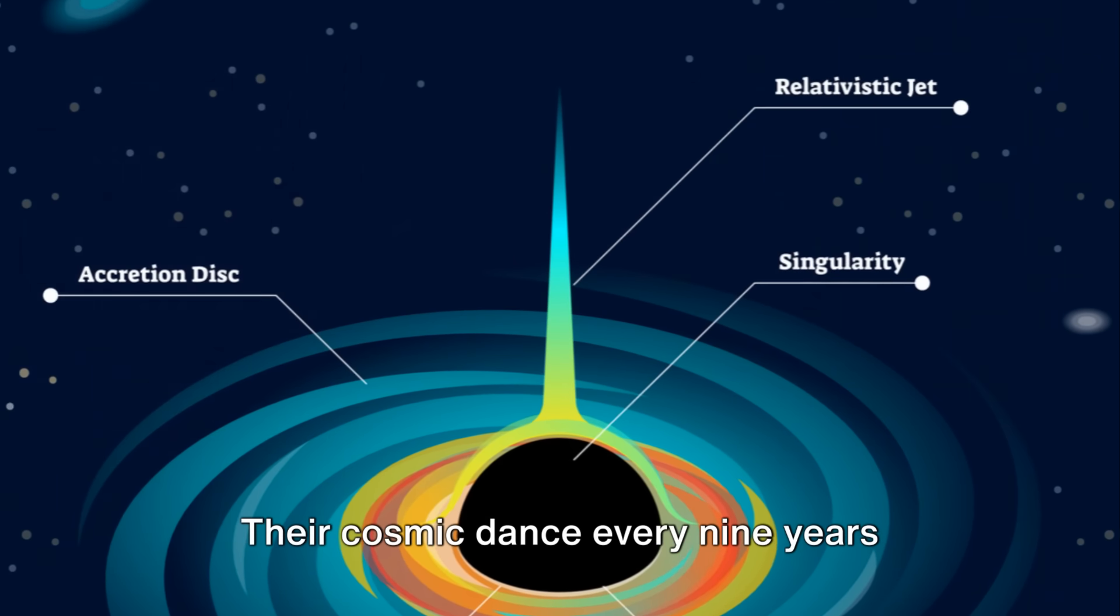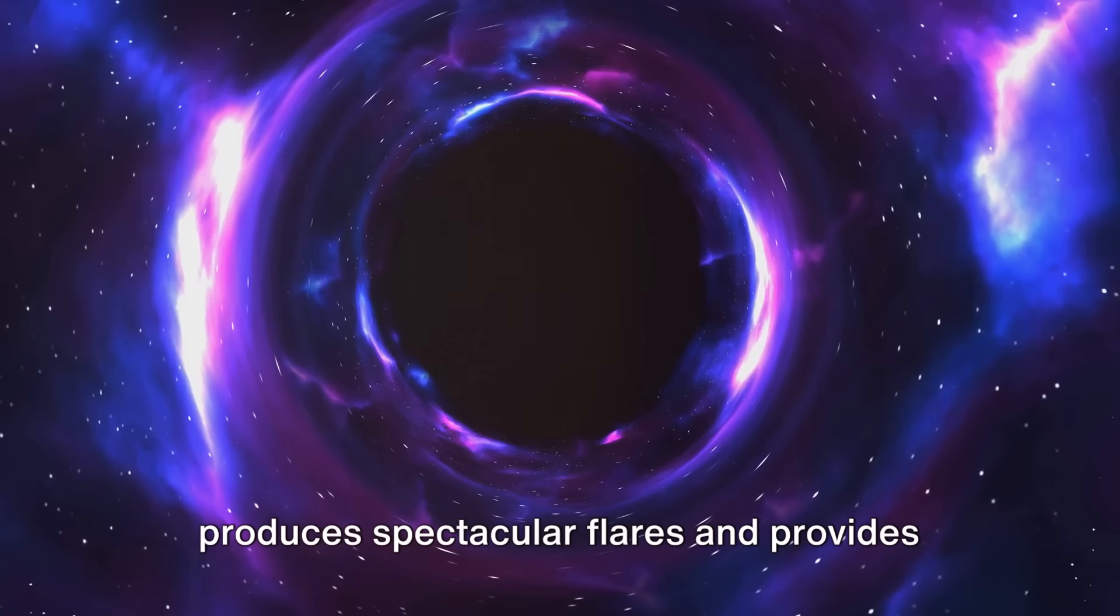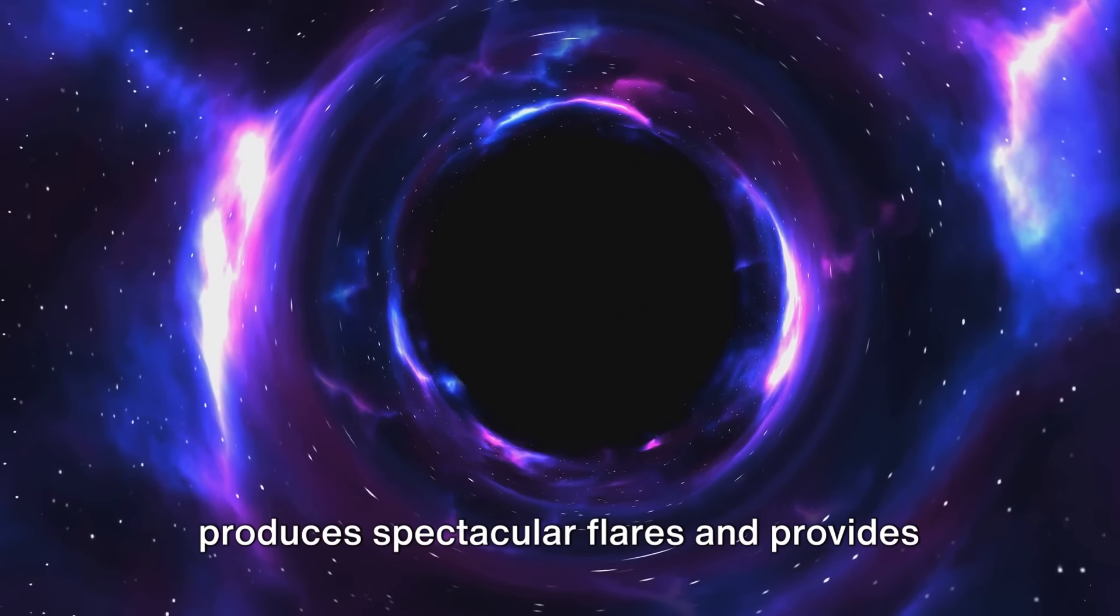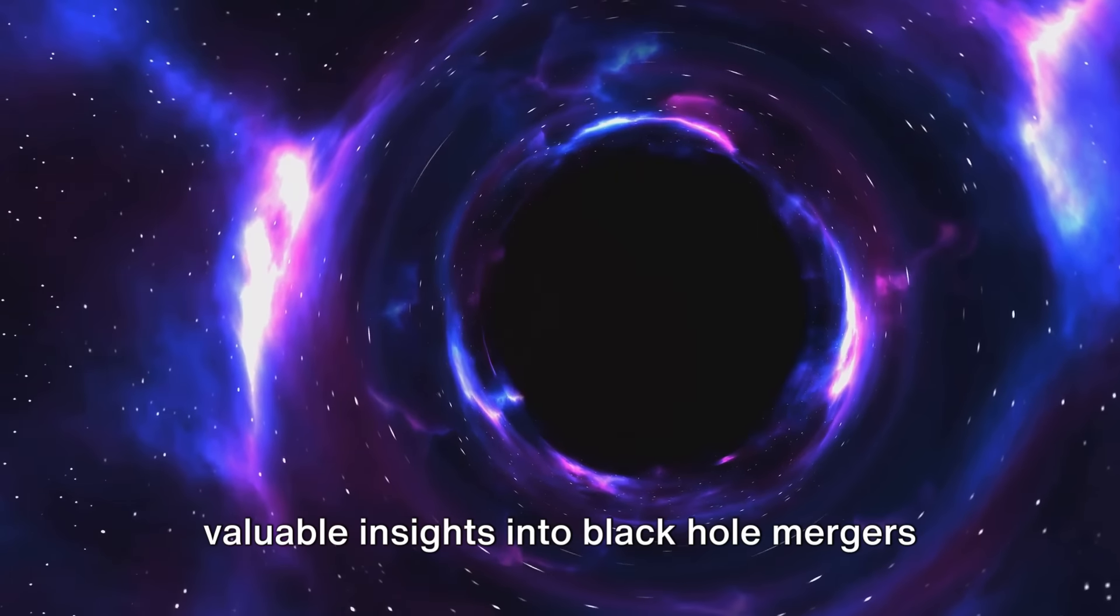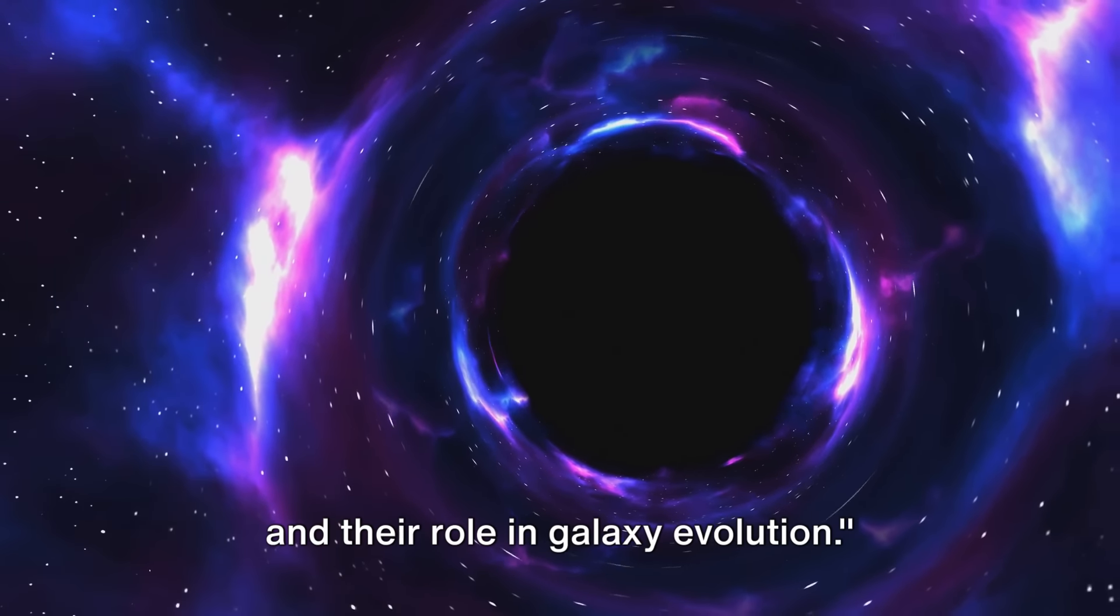We then venture to OJ-287, a unique black hole binary system. Located 3.5 billion light-years away, this system consists of two supermassive black holes, one with a mass of 18 billion times that of our sun, and the other a comparatively smaller 150 million times the sun's mass. Their cosmic dance, every nine years, produces spectacular flares and provides valuable insights into black hole mergers and their role in galaxy evolution.